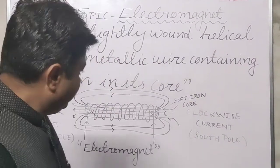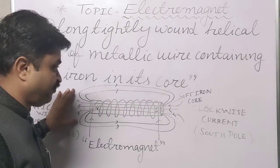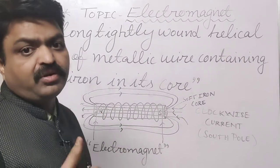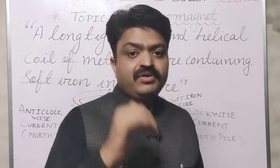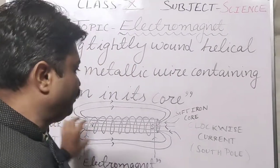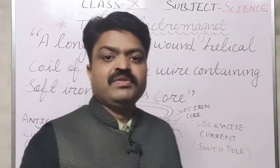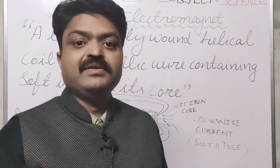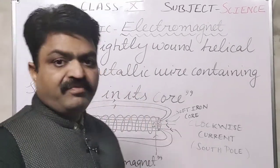The magnetic field that is produced is stronger than the solenoid due to the presence of the iron core, because the iron core also shows magnetism when the current is passed through these circular wires.